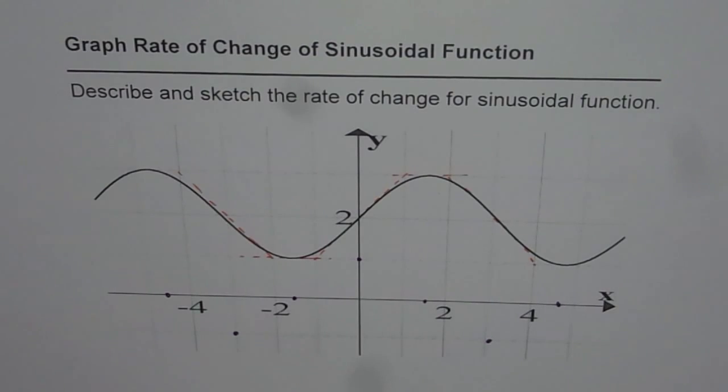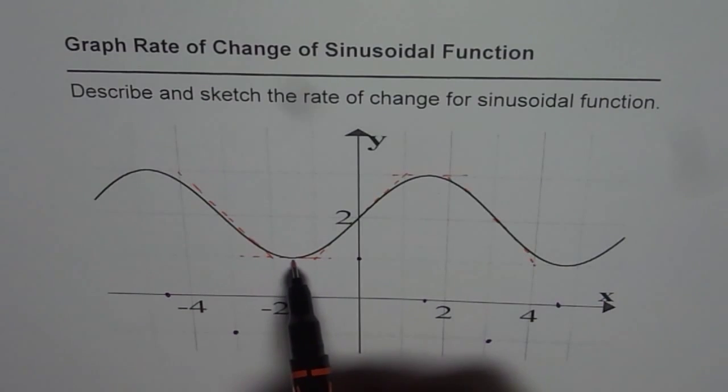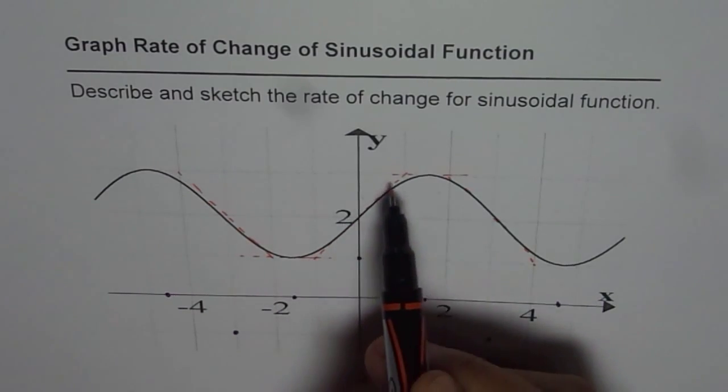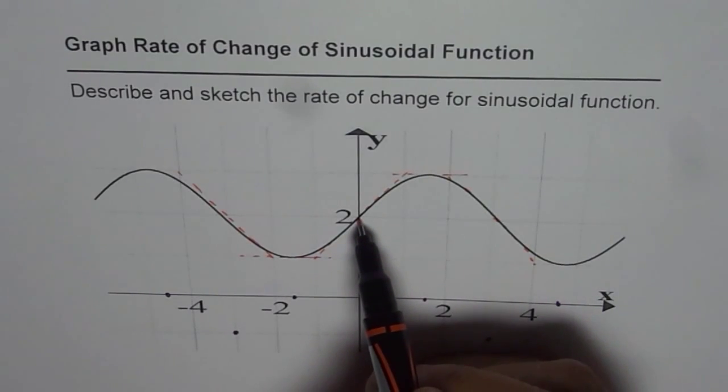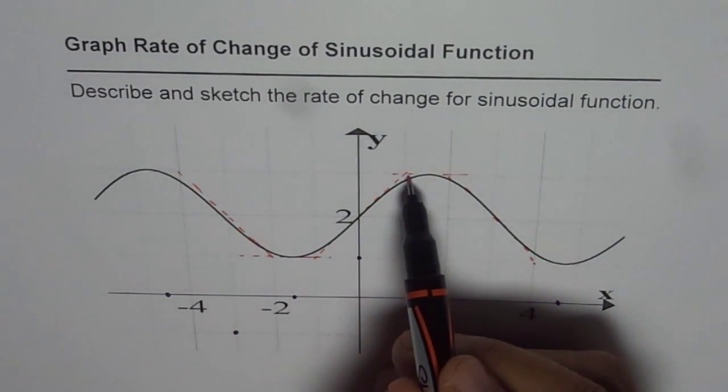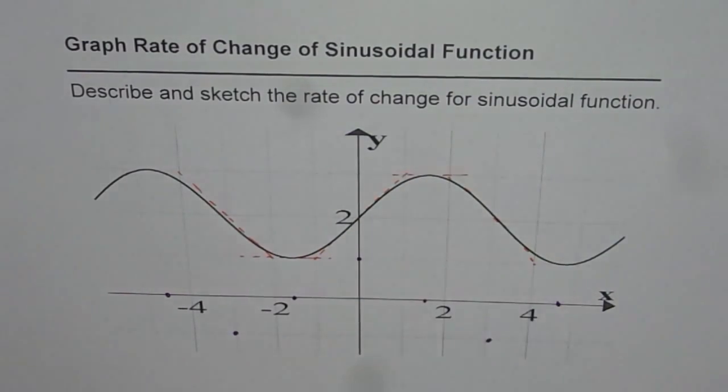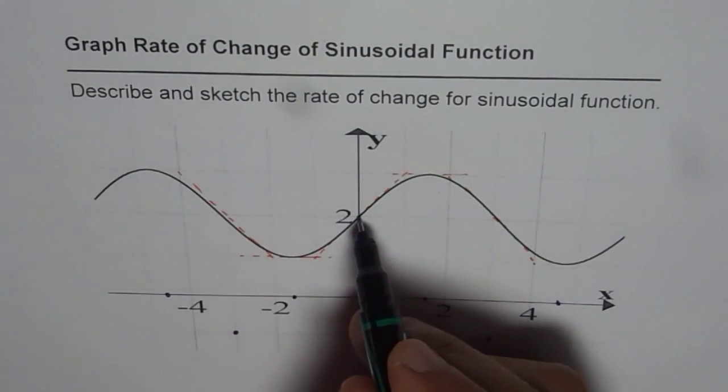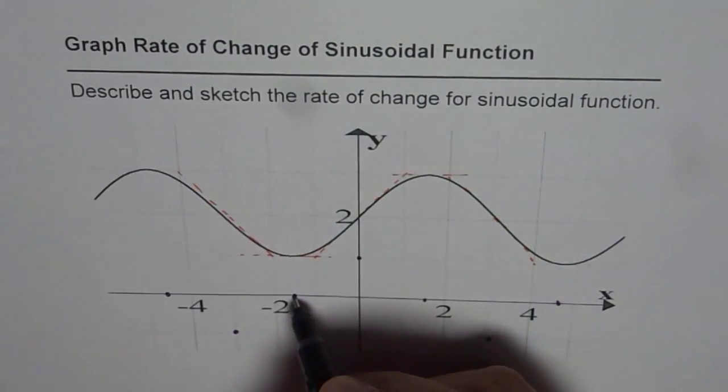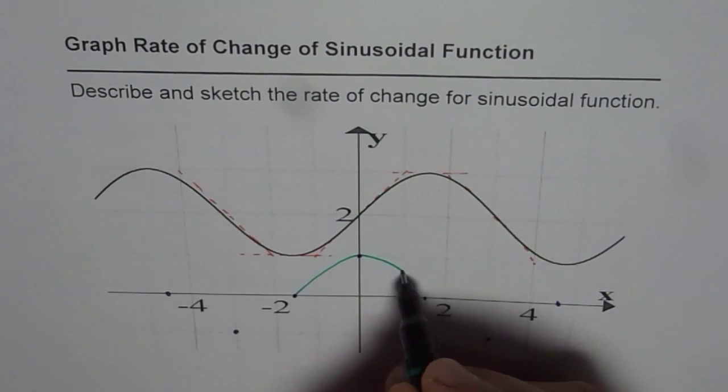It is increasing from zero to one, and then it decreases from one to zero. If I have to draw this from here, from zero it is increasing, and then it decreases to zero. So this half is kind of like this.